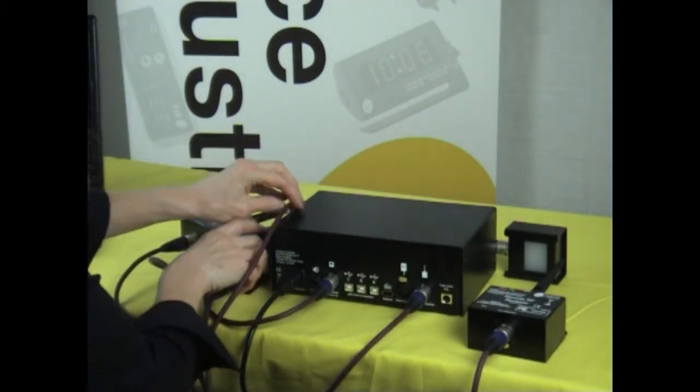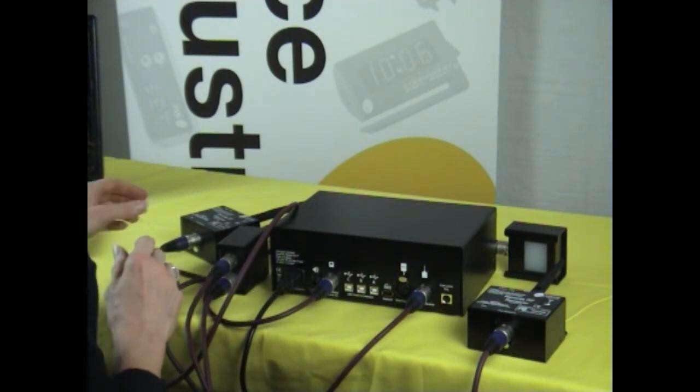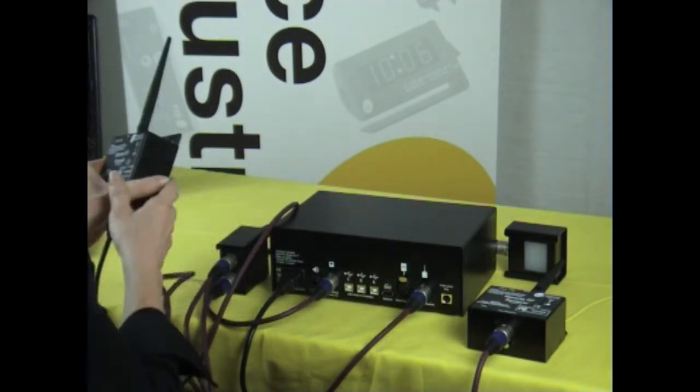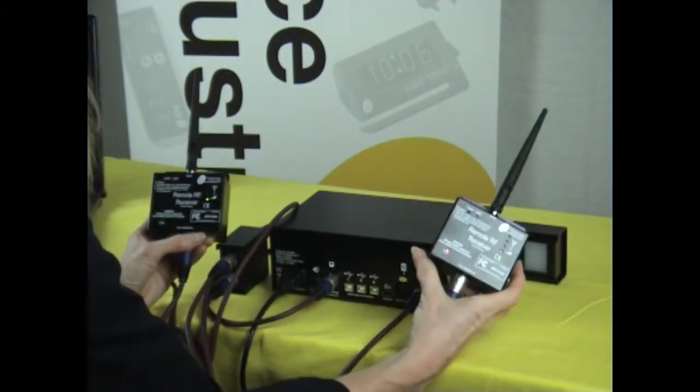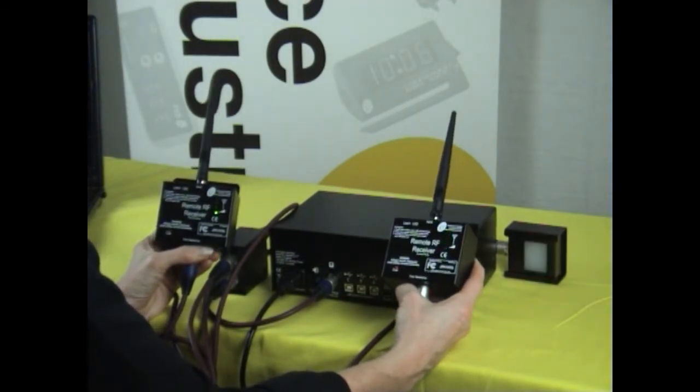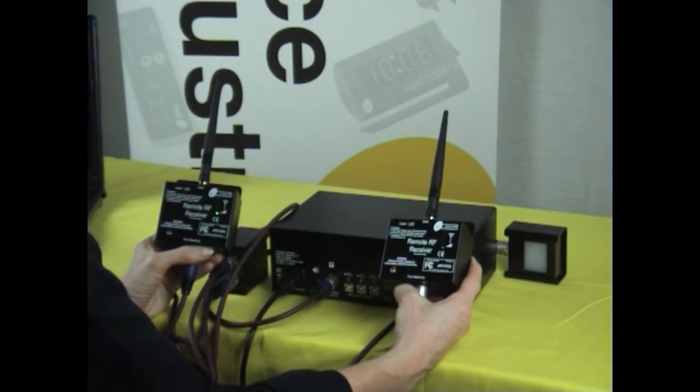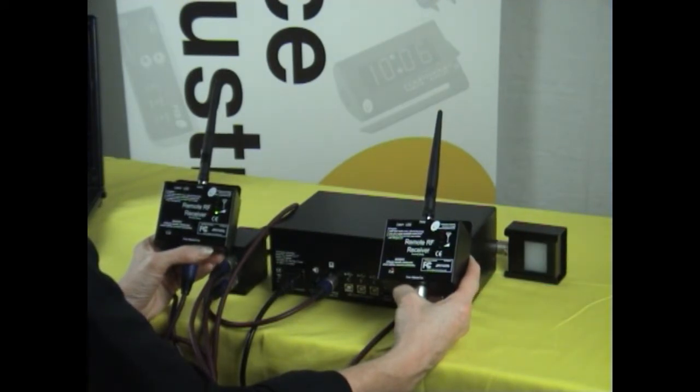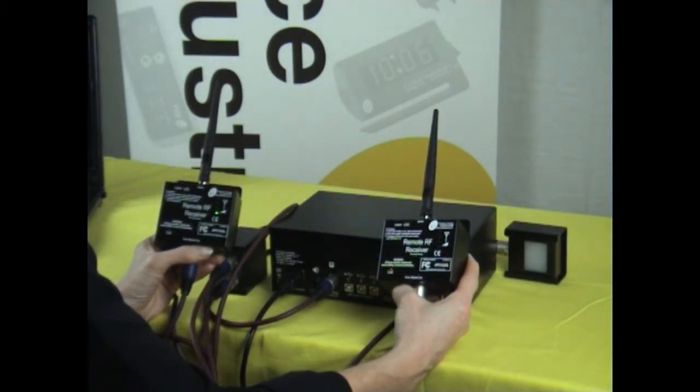Now when a queue is activated, either of the RF receivers will pick up the signal and you can see that the RF level indicator illuminates on both receivers. Up to a combined total of 200m of good quality cabling can be used.